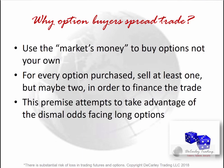In summary, the idea is to use the market's money to buy options, not your own. For every option you buy, consider selling at least one or maybe two to finance the trade. In a market like corn, you can buy an option for four or five hundred dollars relatively close to the market with three or four months to expiration, so a spread may not be necessary. But in expensive markets like crude oil or the S&P, spreads make a lot of sense.